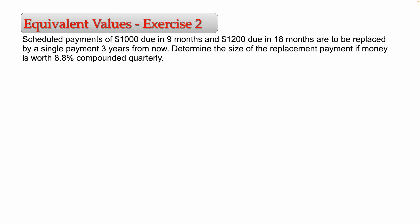Hello, students. In this video, I will be solving two problems related to equivalent values. The first problem says: scheduled payments of $1,000 due in nine months and $1,200 due in 18 months are to be replaced by a single payment three years from now. Determine the size of the replacement payment if money is worth 8.8% compounded quarterly.